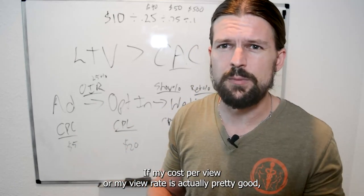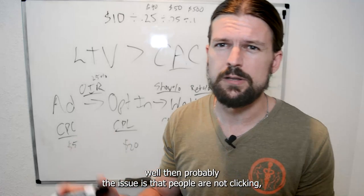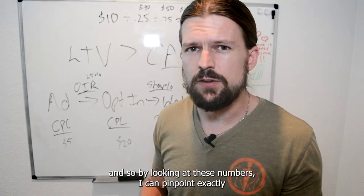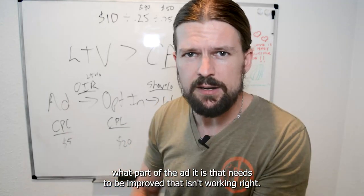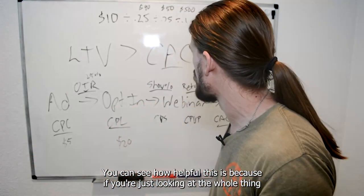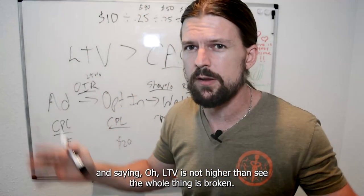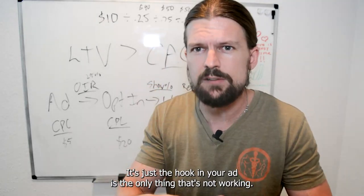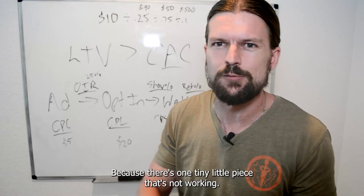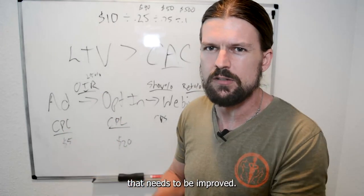If my view rate is actually pretty good, then probably the issue is that people are not clicking — the call to action is weak. By looking at these numbers, you can pinpoint exactly what part of the ad needs improvement. You can see how helpful this is: instead of saying 'LTV is not higher than CAC, the whole thing's broken,' you might find it's just the hook in your ad that's the only thing not working and everything else is fine. If you understand the numbers, you can pinpoint exactly what needs to be improved.